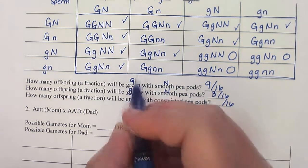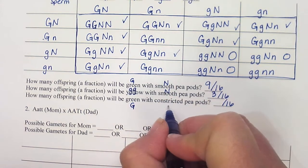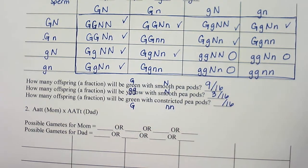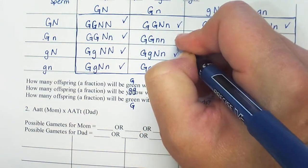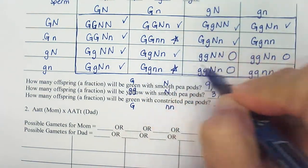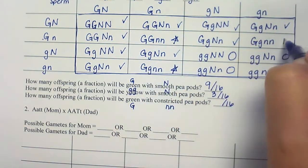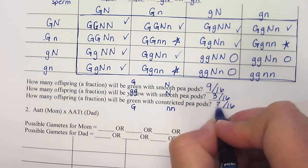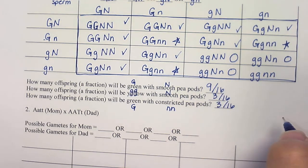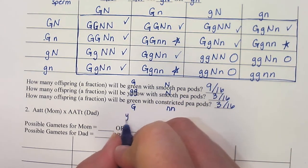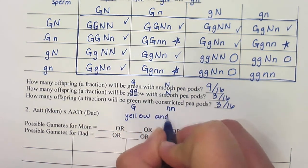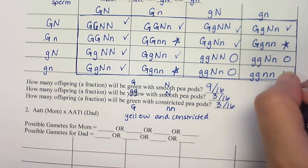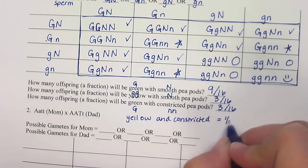Now the opposite: green and constricted. Green is dominant so I need at least one big G, and constricted is recessive so I need two little Ns. Checking: big G with little Ns here, here, and here — but not the all-recessive box. That's three out of 16. The last remaining category is yellow and constricted — fully recessive — which is one out of 16.